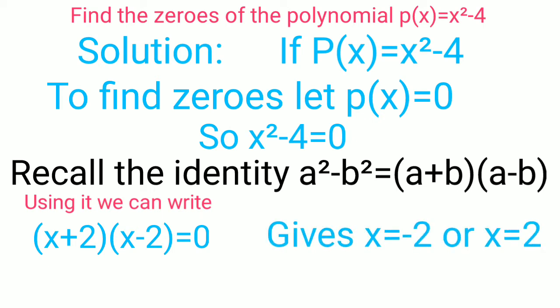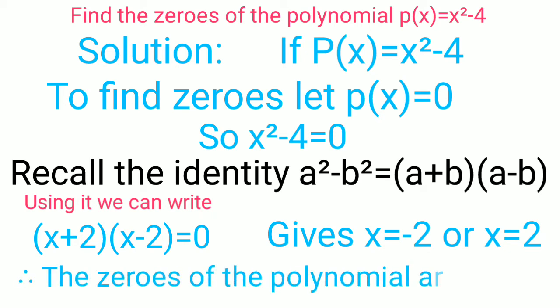Gives x is equal to minus 2 or x is equal to 2. Therefore, the zeros of the polynomial are minus 2 or 2.